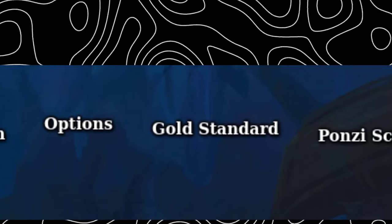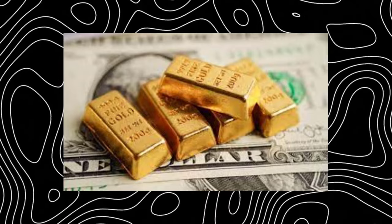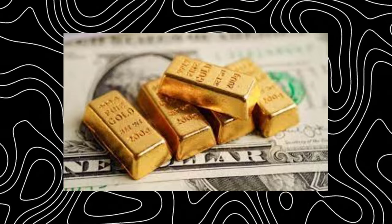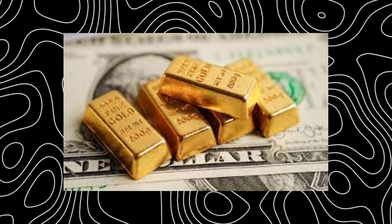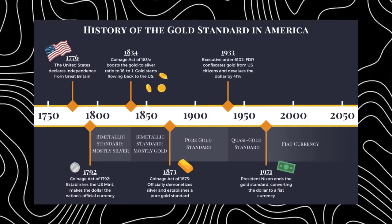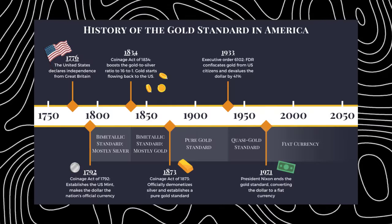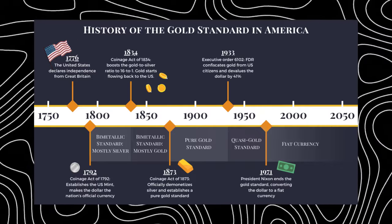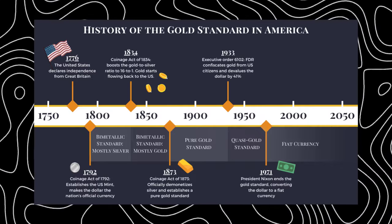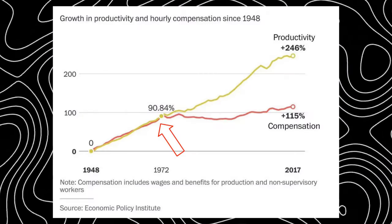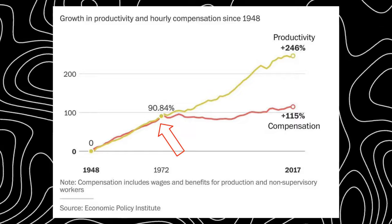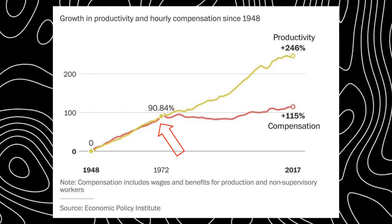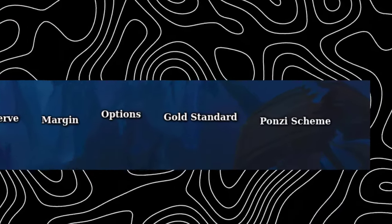The gold standard: a monetary system where a country's currency is directly linked to gold. The gold standard was the global basis for the international monetary system until the early 1920s. In 1971, the United States officially ended its gold standard. While no longer used by any government, its history offers valuable insight into the evolution of the current financial system and how intrinsic value of physical currencies tied to the digital systems we use today.